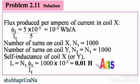Number of turns on coil X, N₁, is given as 1000 and number of turns on coil Y, N₂, is also equal to 1000. Self-inductance of coil X or Y — because they both have the same number of turns and the same flux linking — L = N₁ × (φ₁/I₁) = 1000 × 10⁻⁵ = 0.01 Henry. This is the self-inductance of the coils.